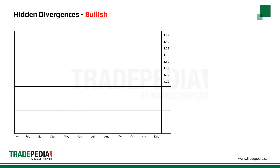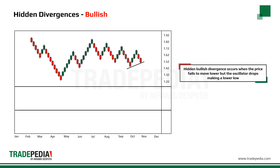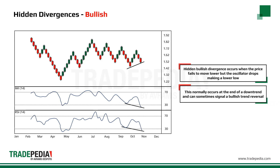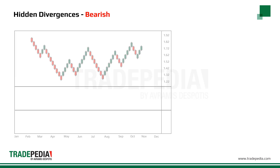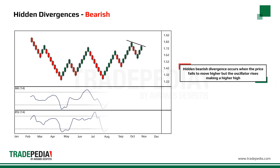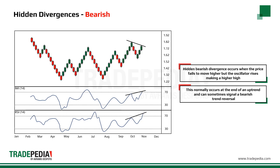How to spot hidden divergences. Hidden bullish divergence occurs when the price fails to move lower, but the oscillator drops, making a lower low. This normally occurs at the end of a downtrend and can sometimes signal a bullish trend reversal. A hidden bearish divergence occurs when the price fails to move higher, but the oscillator rises, making a higher high. This normally occurs at the end of an uptrend and can sometimes signal a bearish trend reversal.